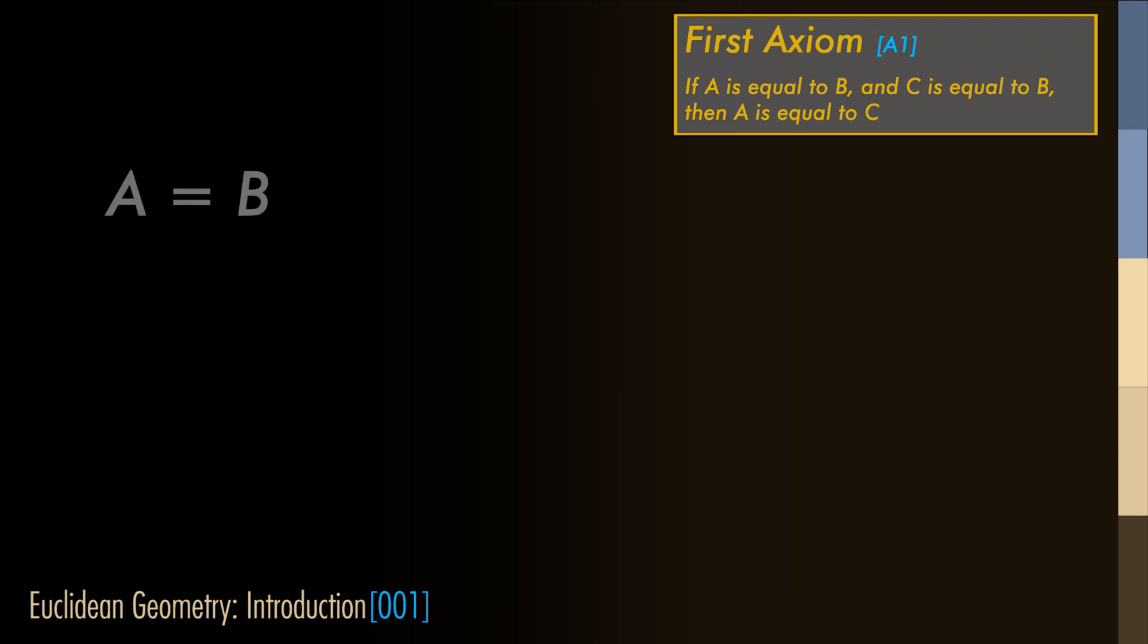To be able to construct the logical framework of Euclidean geometry, Euclid also included five axioms concerning very common notions. The first axiom states that if one thing is equal to a second thing, and the third thing is also equal to that second thing, then the first thing is equal to the third thing. Many among you will know this as a transitive relationship.